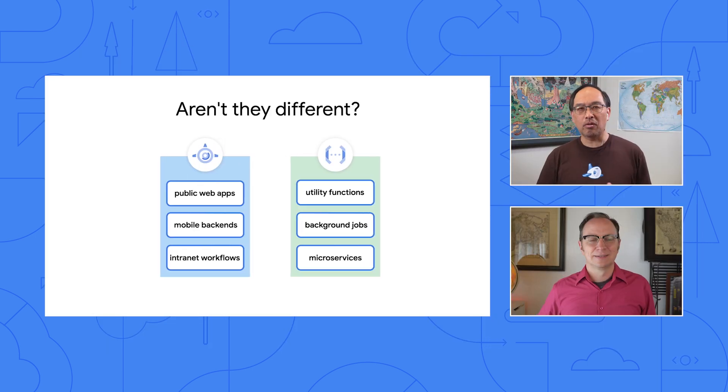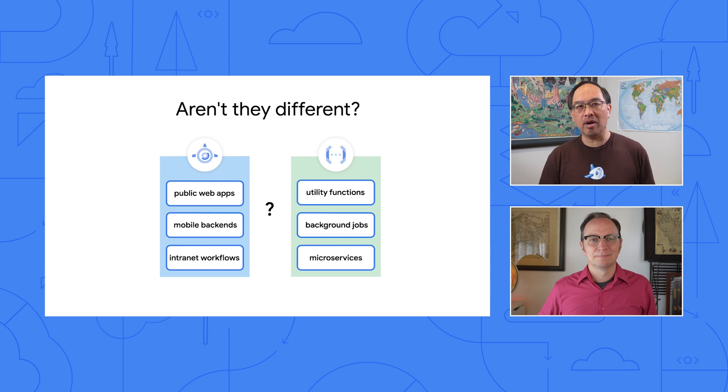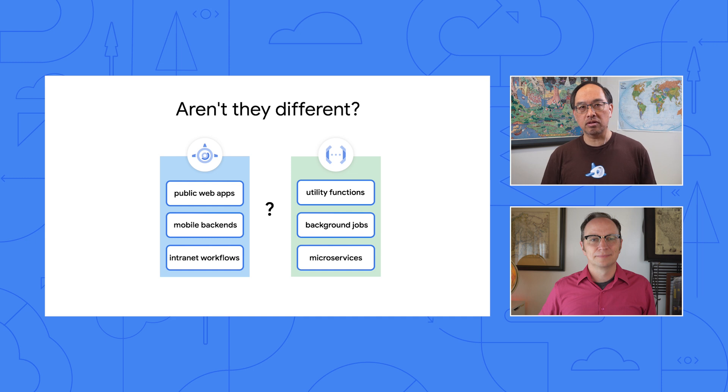I didn't even know you could do this with Cloud Functions. But isn't App Engine really different from Cloud Functions? App Engine is great for full-stack web apps or mobile backends, while Cloud Functions sounds like it's for event-driven microservices or one-off utility functions. Answering when you'd move from App Engine to Cloud Functions is the first order of business, before discussing how to do it.